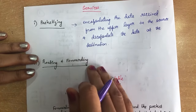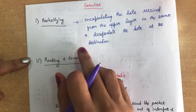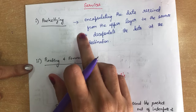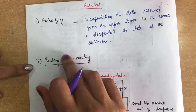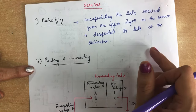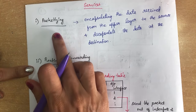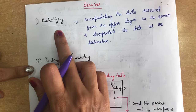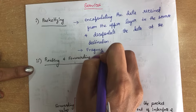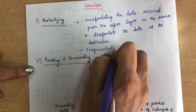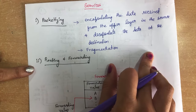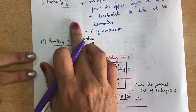The network layer is also responsible for handling fragmentation. If a packet has been fragmented at the source, it is the duty of the network layer to ensure that all the fragments reach the destination properly and accurately. This is also a function of the network layer under packetizing.